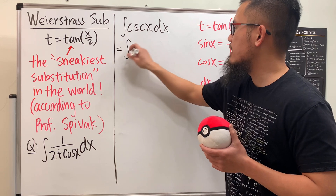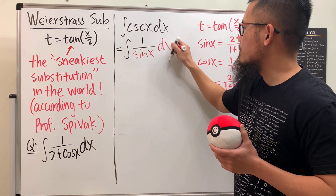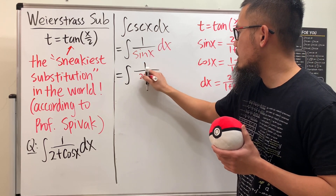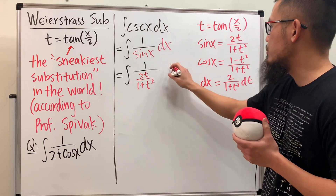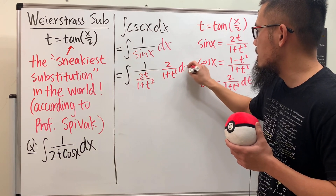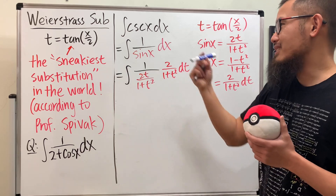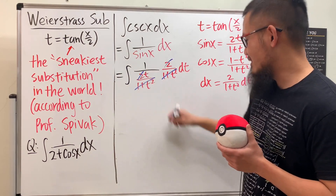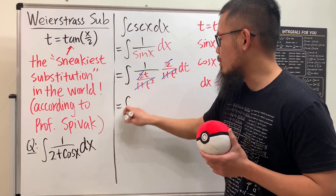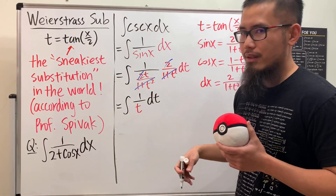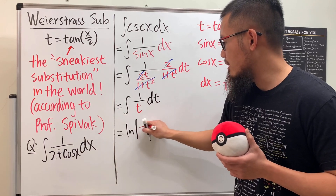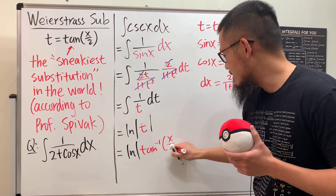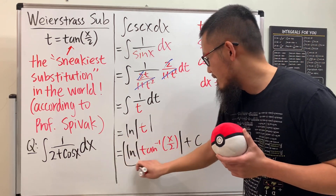Now let's integrate 1 over sine x using the Weierstrass substitution. We replace sine x with 2t/(1+t²) and dx with 2/(1+t²) dt, giving the integral of [1 over (2t/(1+t²))] times [2/(1+t²) dt]. The (1+t²) terms cancel and the 2's cancel, leaving simply the integral of 1/t dt, which is ln|t| plus C.